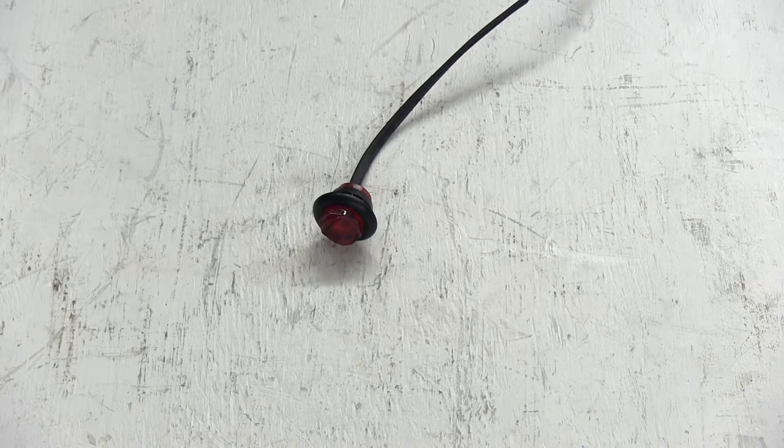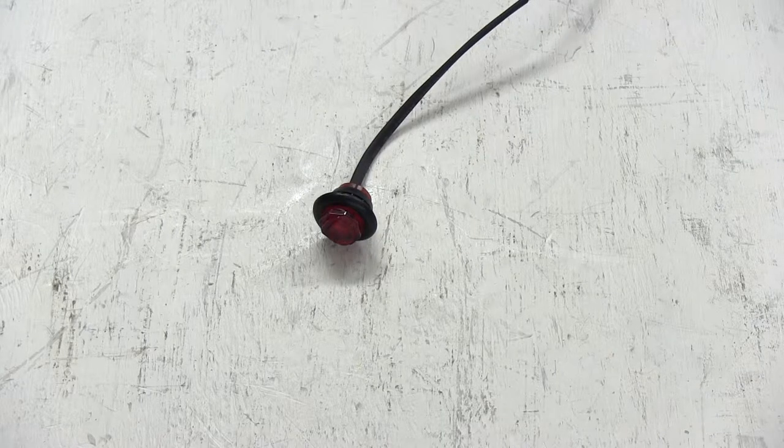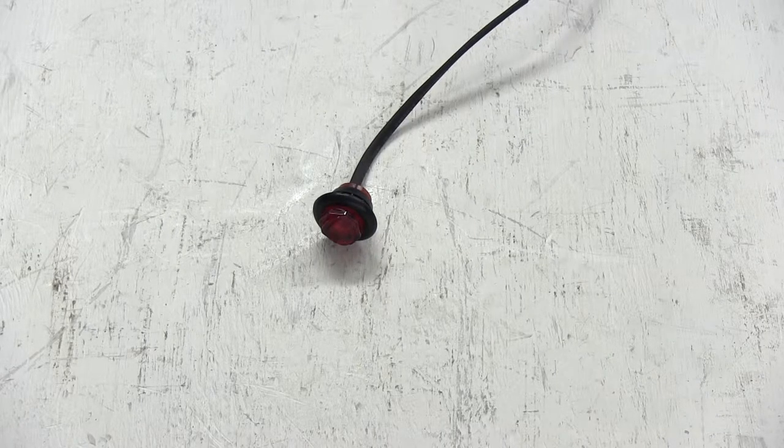Today we're going to take a look at Optronics Sealed Unilite Mini LED Side Marker, Part Number MCL11RKB.